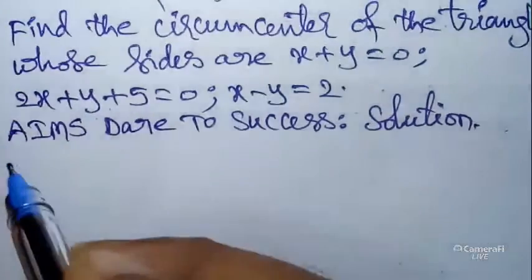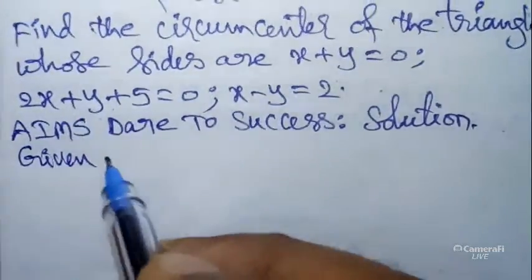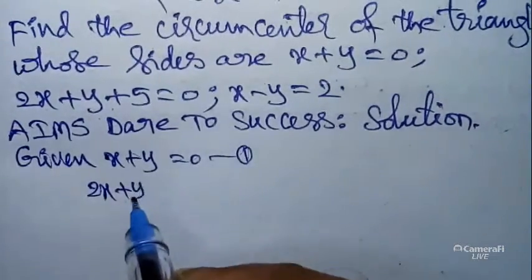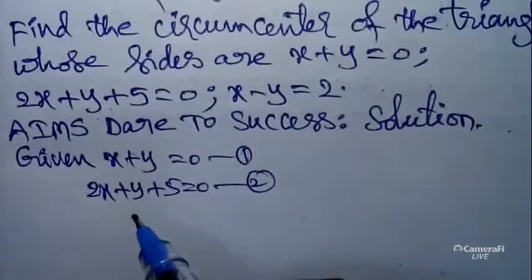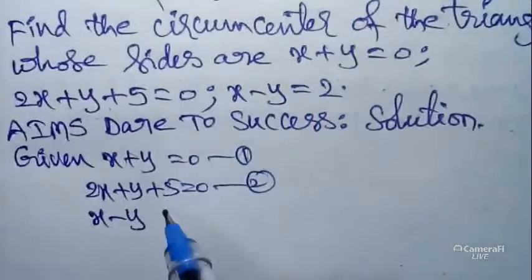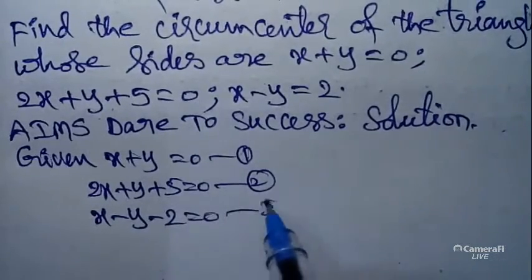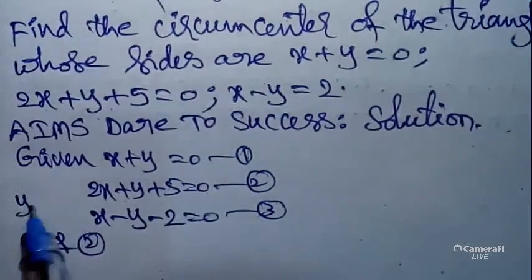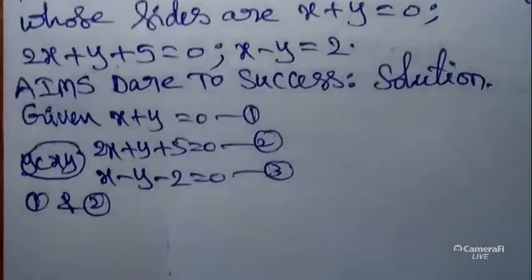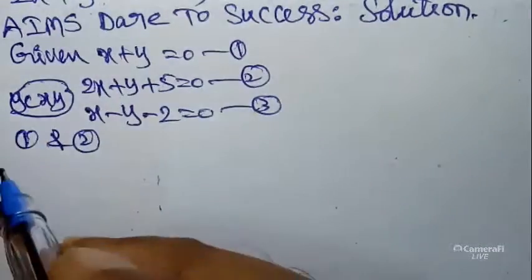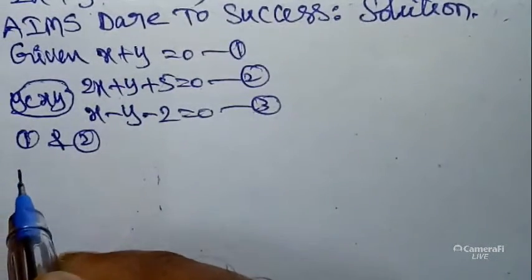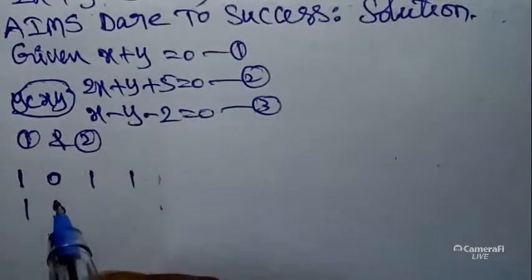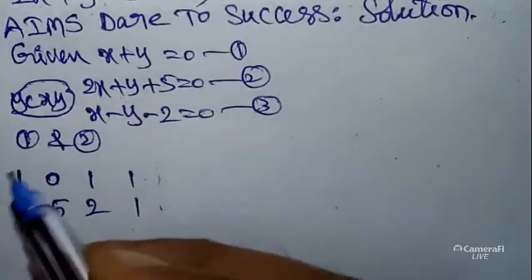I want to write the given three equations. First: x + y = 0 — equation (1). Second: 2x + y + 5 = 0 — equation (2). Third: x - y = 2, which rearranges to x - y - 2 = 0 — equation (3). Now solve equations (1) and (2). Remember my logic: y, c, x, y. From equation (1): y-coefficient = 1, constant = 0, x-coefficient = 1. From equation (2): y-coefficient = 1, constant = 5, x-coefficient = 2.